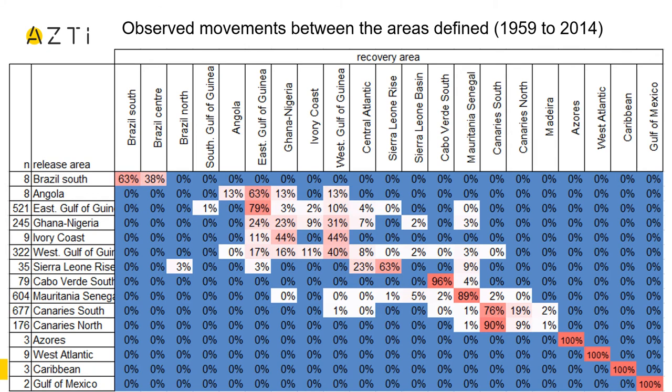Let's see how the skipjack tunas have been moving across these areas. On this table we summarized, for each tagged area, the percentage of tunas that were recovered in each of them after filtering for short-term recoveries. The rows are the areas where the skipjacks were tagged and the columns are the areas where they were recovered. We can observe different groups that show similarities and connections.